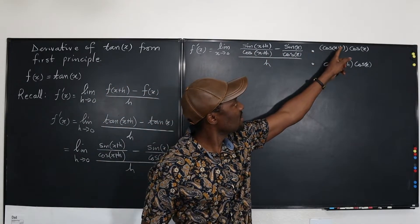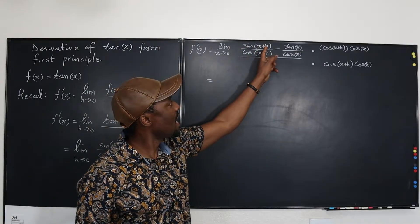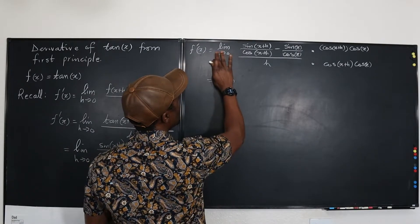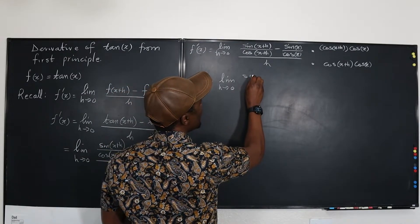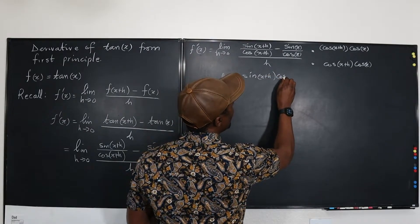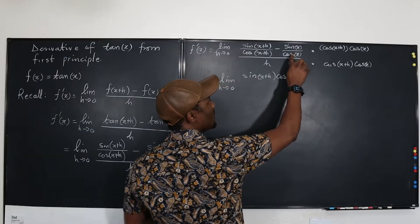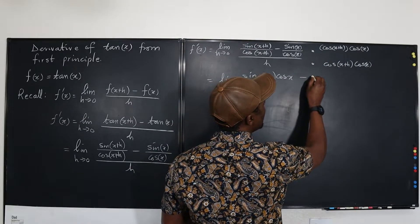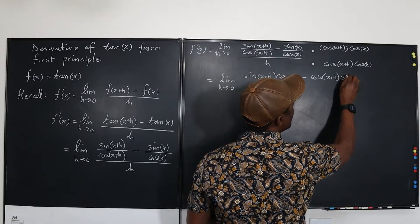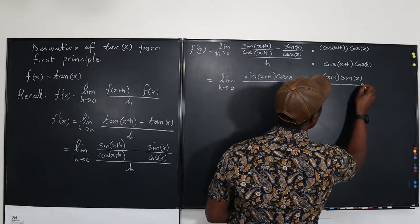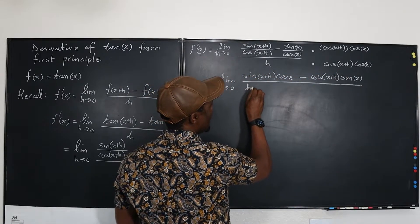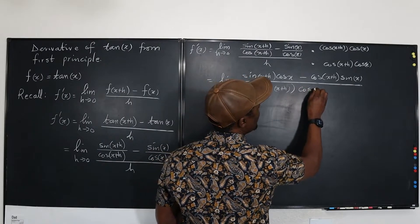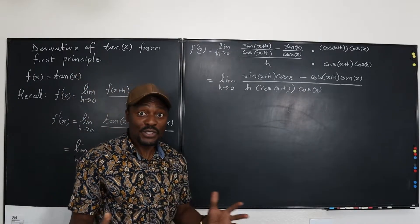When you multiply sin(x+h)/cos(x+h) by cos(x+h)·cos(x), the cos(x+h) cancels, leaving sin(x+h)·cos(x). Doing the same for the second term, the cos(x) cancels, leaving minus cos(x+h)·sin(x). The denominator becomes h·cos(x+h)·cos(x).